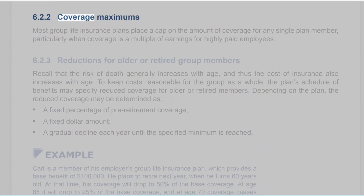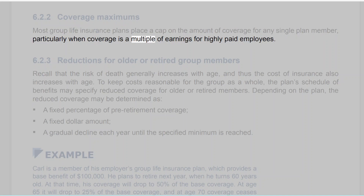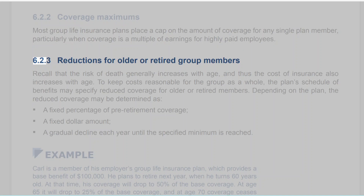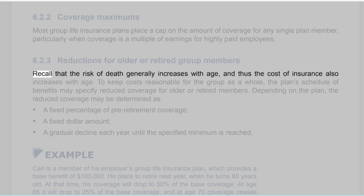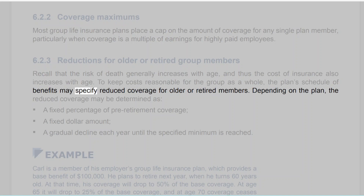6.2.2 Coverage Maximums. Most group life insurance plans place a cap on the amount of coverage for any single plan member, particularly when coverage is a multiple of earnings for highly paid employees. 6.2.3 Reductions for Older or Retired Group Members. The risk of death generally increases with age, and thus the cost of insurance also increases with age. To keep costs reasonable for the group as a whole, the plan's schedule of benefits may specify reduced coverage for older or retired members.